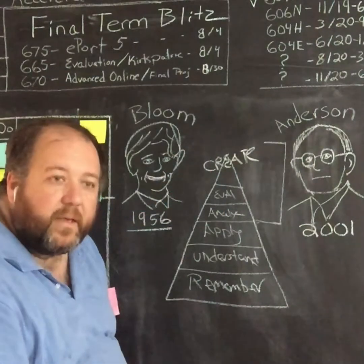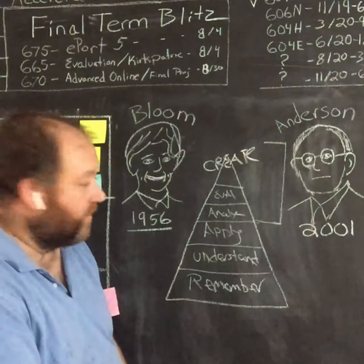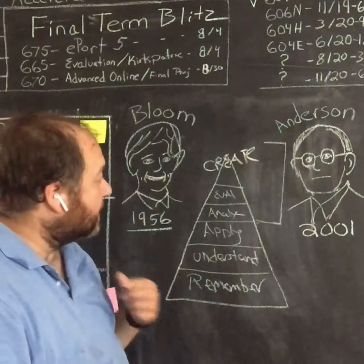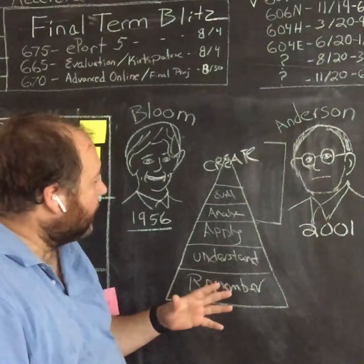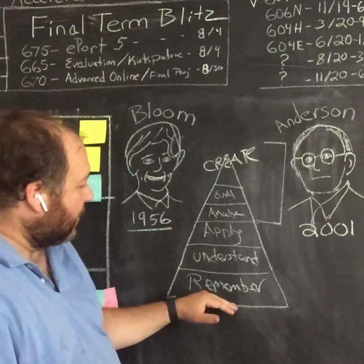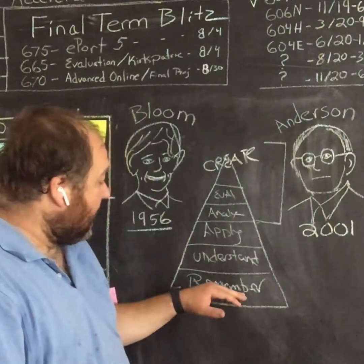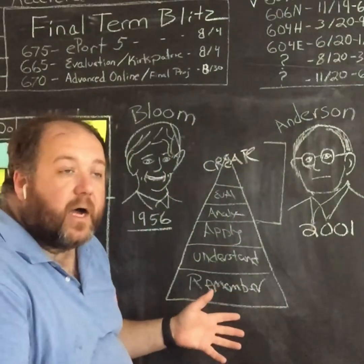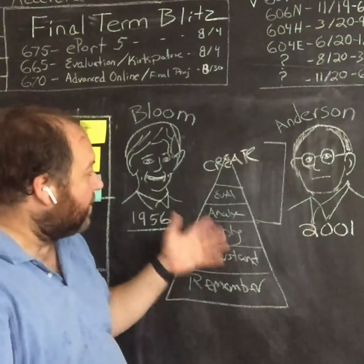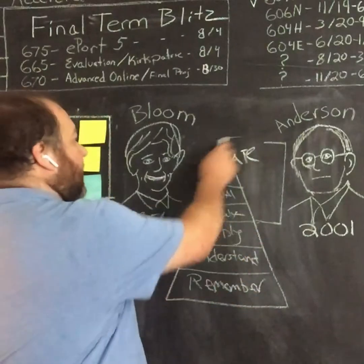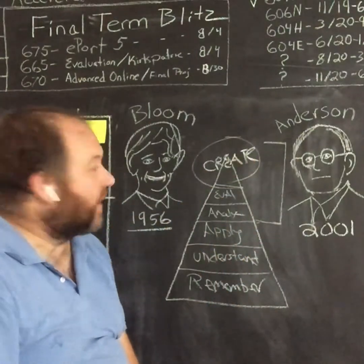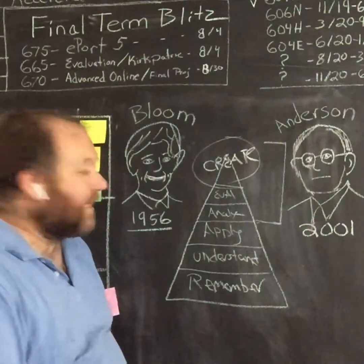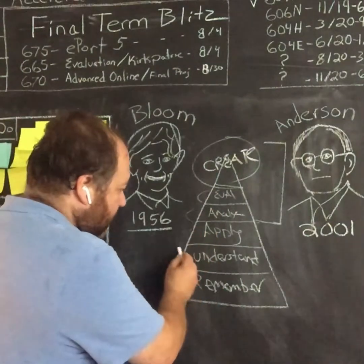So that's Bloom's taxonomy of learning for the cognitive domain. A lot of people look at this and use a verb guide — I love verb guides — with action verbs for each of the levels. Then the boss says focus on the higher learning skills, so they go straight to create and write their learning objectives as 'learners will create something.' But you can't really do that unless you've built the foundation on each of these different levels.